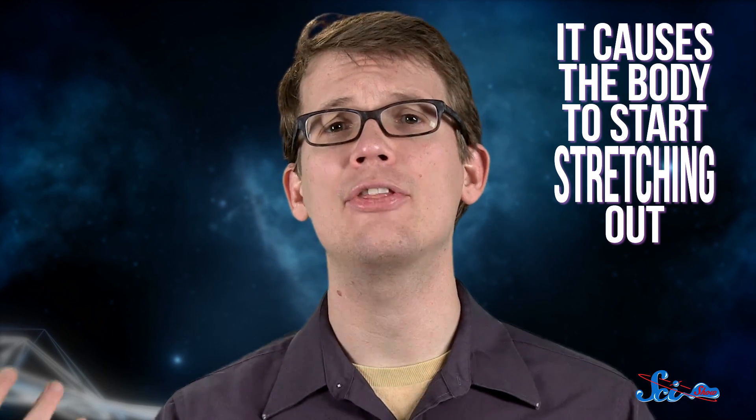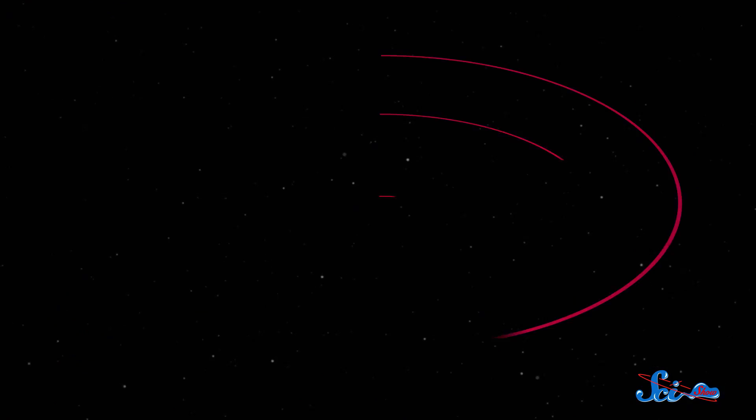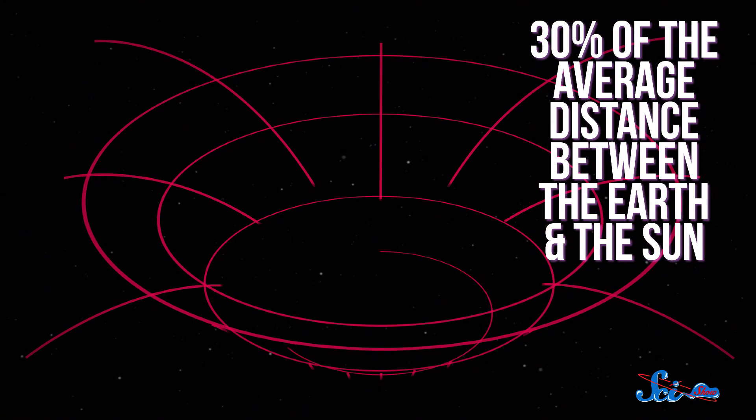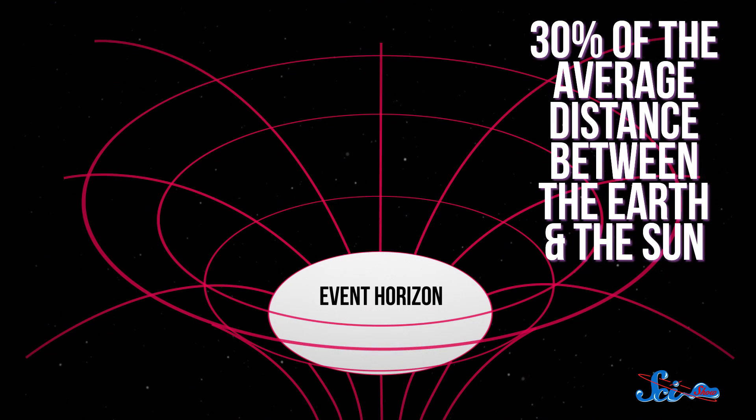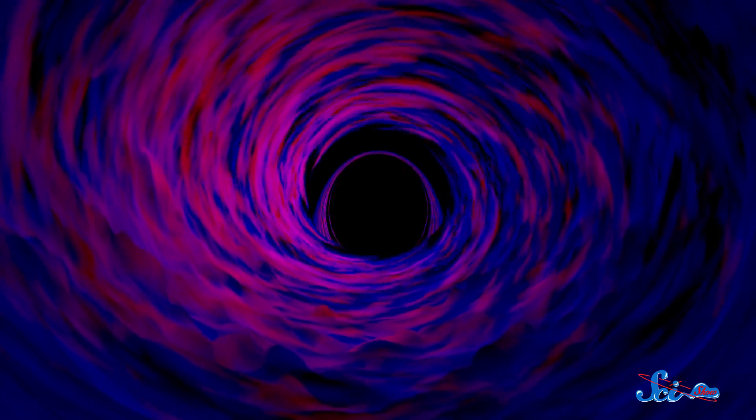Now, the boundary that stakes out the maximum danger zone around any black hole is its event horizon. This is the distance from the center where the escape velocity equals the speed of light. For our black hole, the event horizon is about 30 percent the average distance between the Earth and the Sun. So outside that range, an object orbiting the black hole would be far enough away that the tidal forces wouldn't do too much harm. But if the object manages to cross the event horizon, then basically all bets are off.